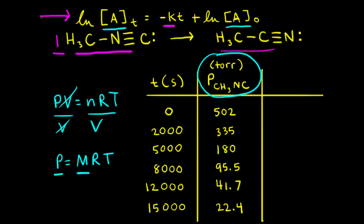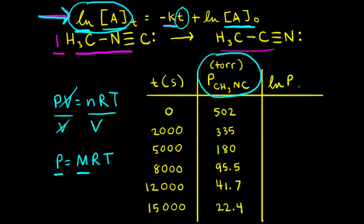Therefore, we can rewrite the integrated rate law as: the natural log of the pressure of our gas at time t is equal to negative kt plus the natural log of the initial pressure of the gas. To show that this reaction is first order, we need to graph the natural log of the pressure of methyl isonitrile on the y-axis and time on the x-axis.